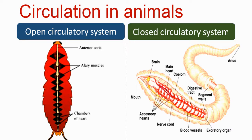In the closed circulatory system, no drop of blood is present in the body cavity. Blood is either in the heart or in the blood vessels.